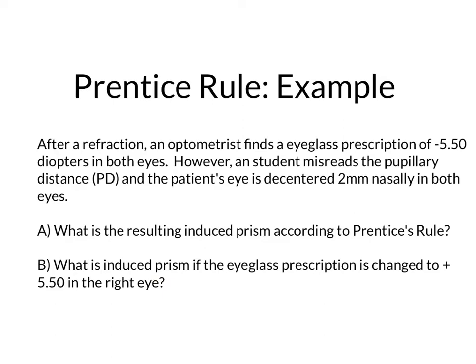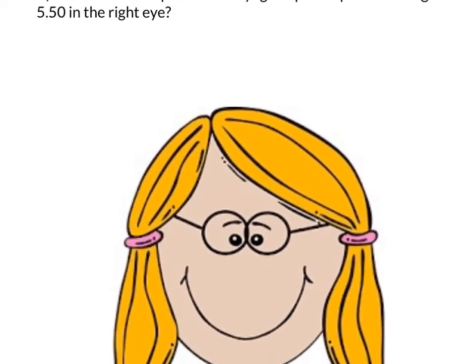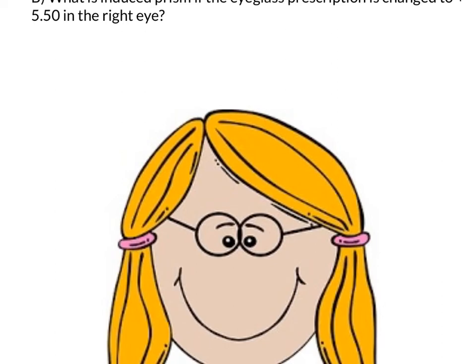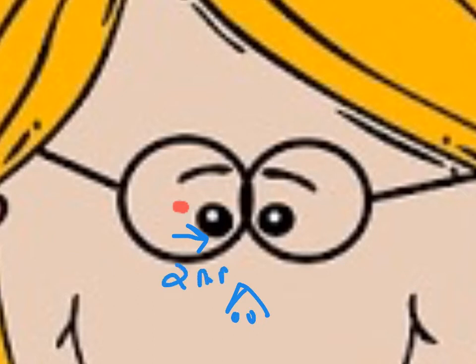Looking at this cartoon, it perfectly illustrates the example. The student misreads the PD, which is the pupillary distance, so the patient's eye is decentered from the optical center. The optical center is marked in red in the eyeglasses. The patient's eye is decentered about two millimeters nasally, meaning towards the nose.